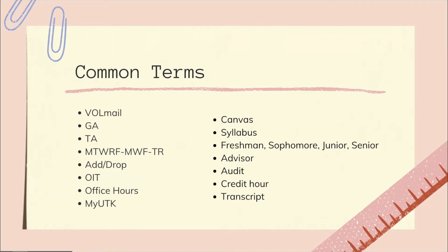Next is the GA, which is a graduate assistant — someone who's working at the university while also studying for their graduate degree. We have some GAs here at the International House and a lot of other offices on campus employ them. Next is the TA or teaching assistant, someone who helps the professor, generally a student you'll see in a lot of your science or math classes.